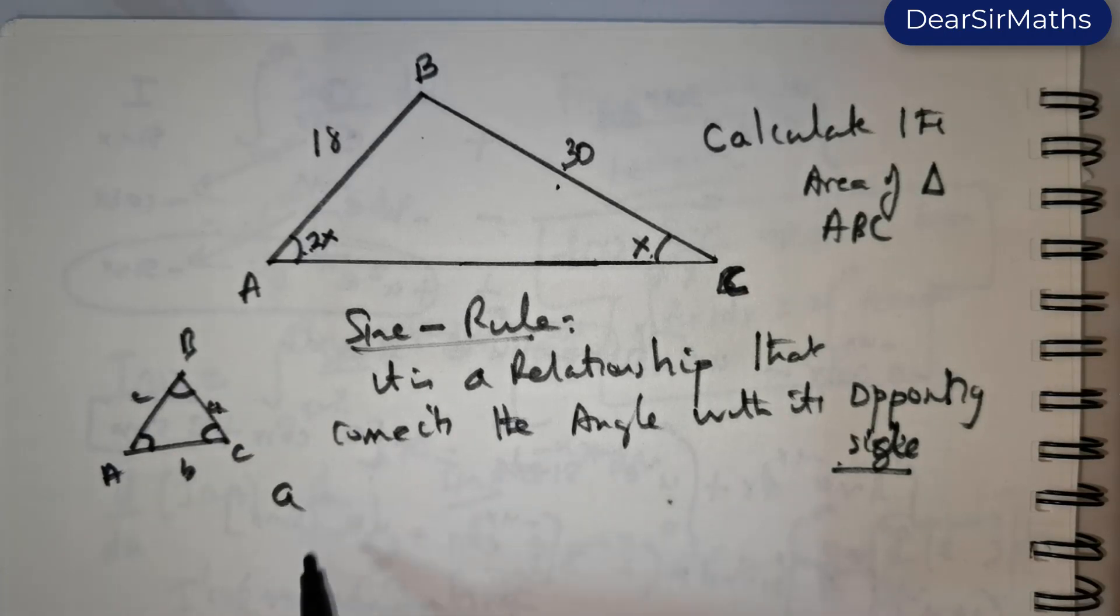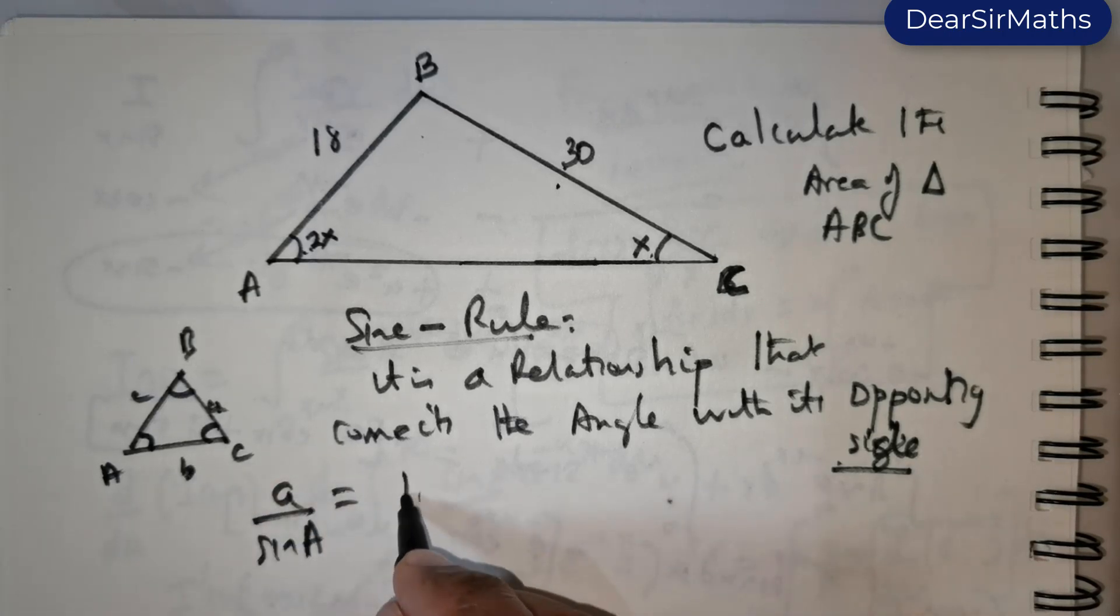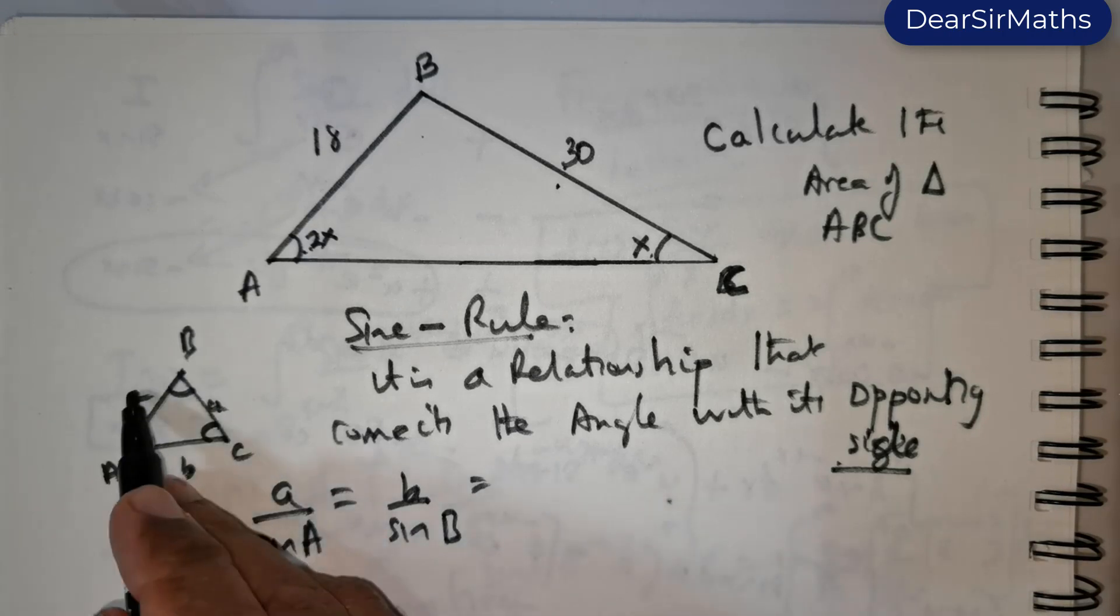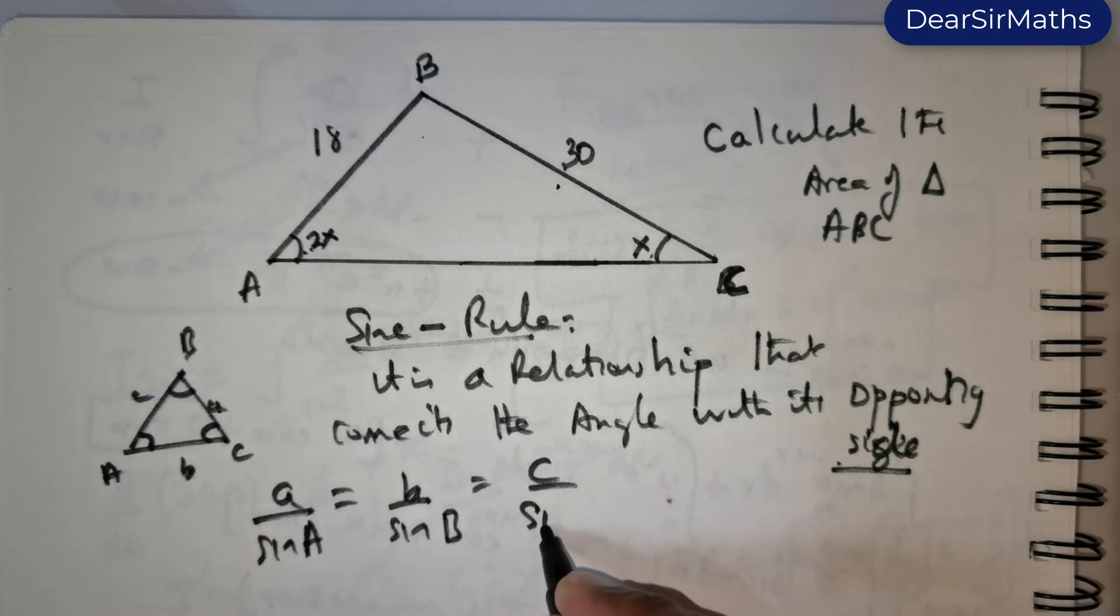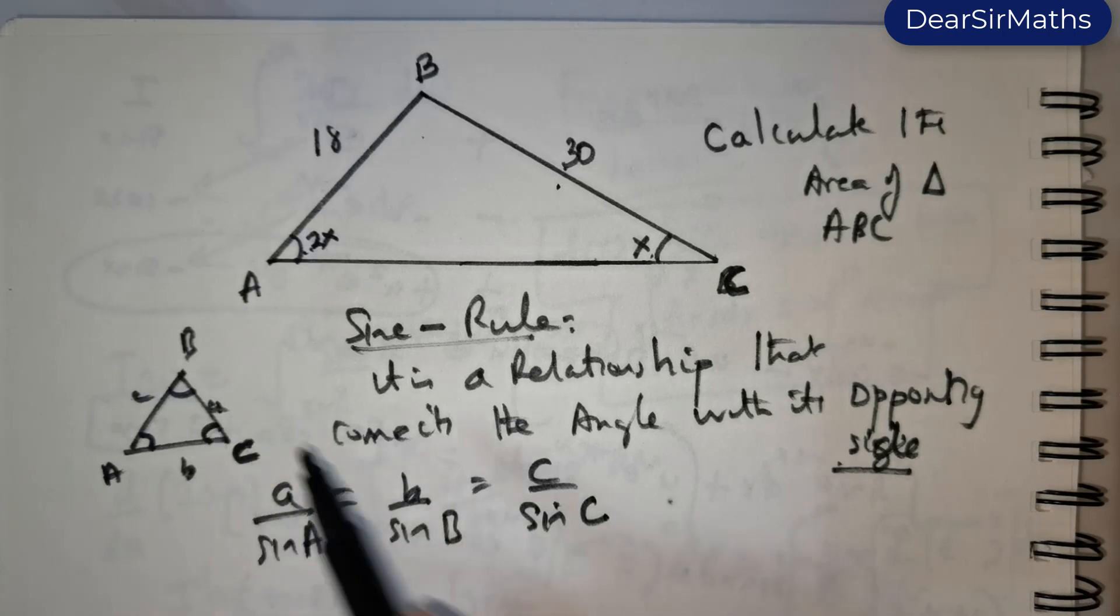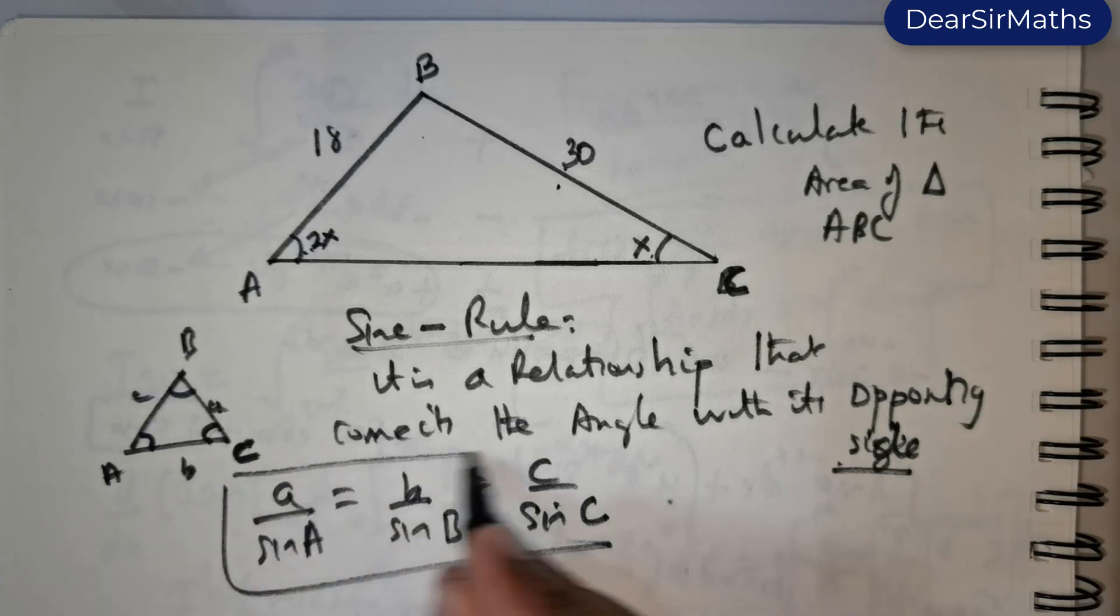So I can write this as a over sin capital A is equal to b over sin capital B is equal to c over sin capital C. So capital C, when I say capital C, I mean the angle over here. So this is what is called the sine rule.